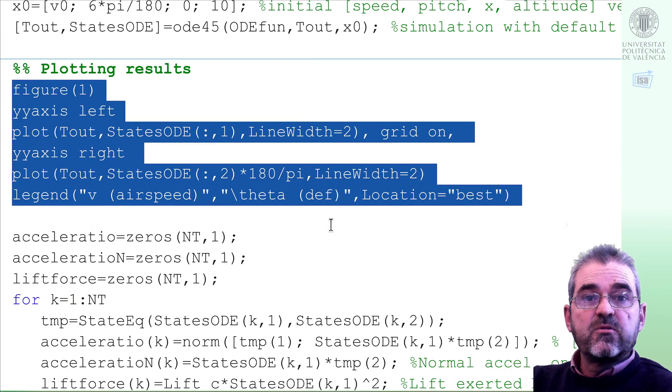If we first look at this code, in this code we plot the first state, airspeed, and the second state, pitch angle, with this kind of axis and plot stuff that you can look in MATLAB's documentation if you have doubts on what each line does.